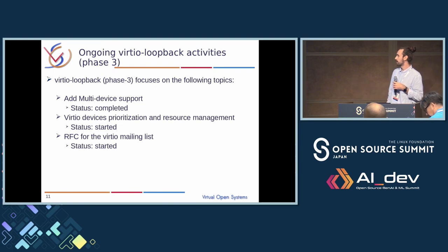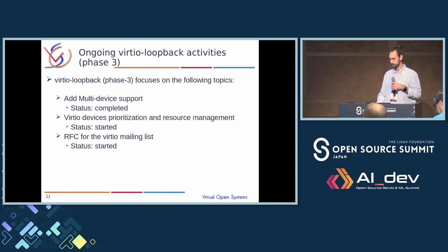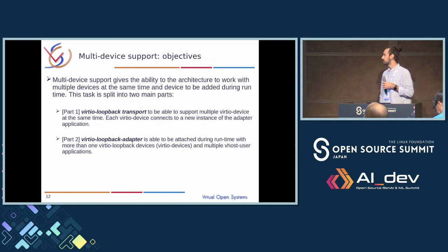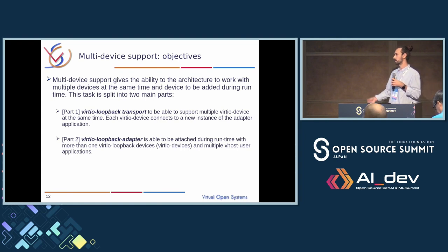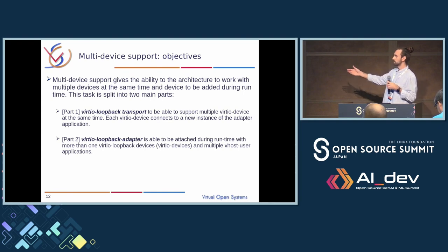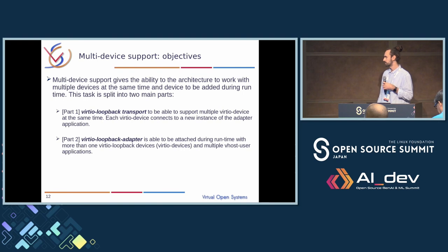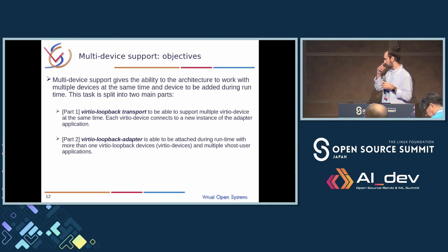The multi-device support, as you would expect, is for the architecture to support multiple VirtIO devices in parallel. This task is split into two parts. The first is to prepare the driver to handle multiple devices which can be allocated dynamically without any hardware device actually being present. In the first part, we were able to connect it with multiple adapter instances, each adapted to be connected with the corresponding VirtIO device. The second part is to prepare the adapter to handle multiple connections and make it work with the updated driver.